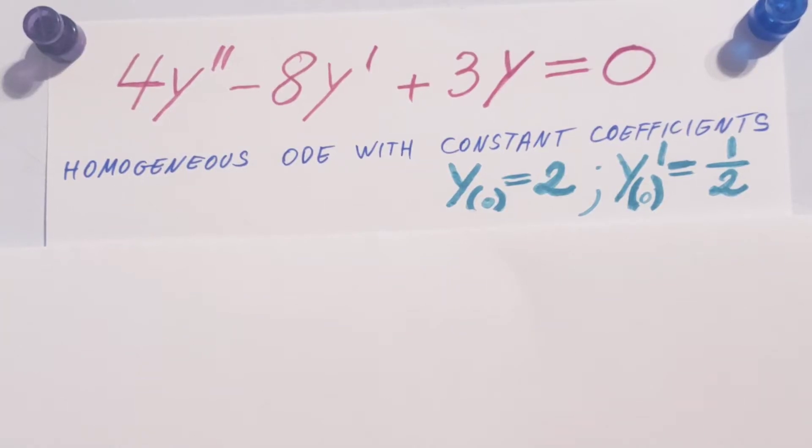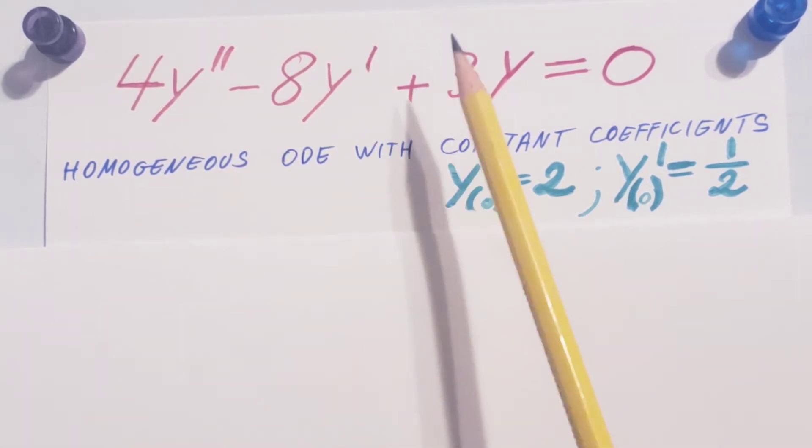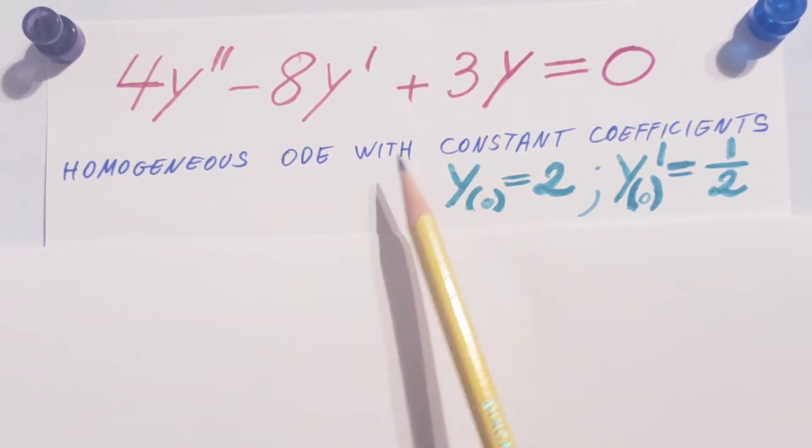Let's solve this initial value problem. We have 4y'' minus 8y' plus 3y equals 0.